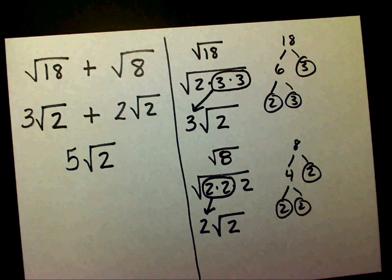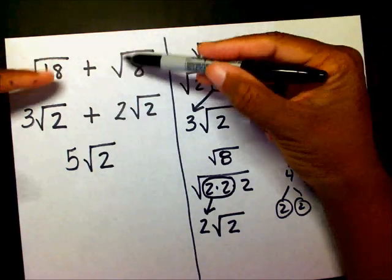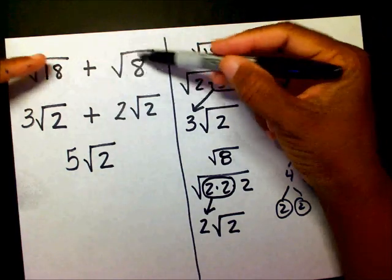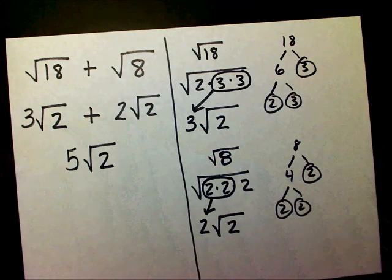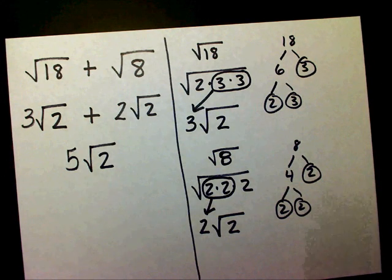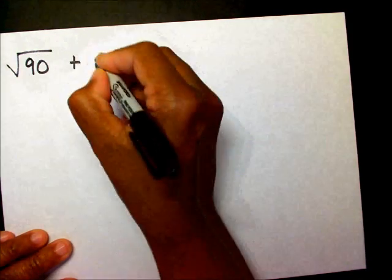Remember, at the beginning I said sometimes you have to simplify your radicals before you're actually able to add your radicals. Let's work another one: radical 90 plus radical 40.